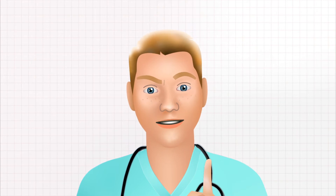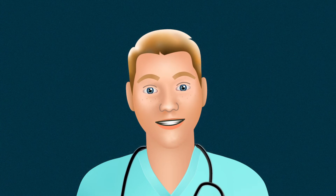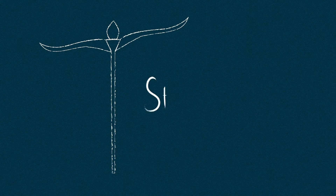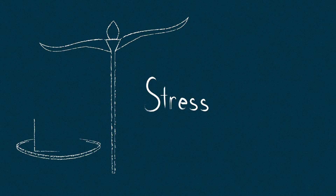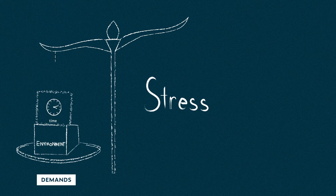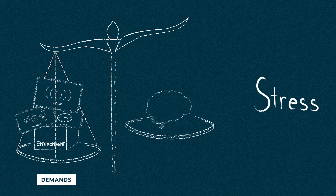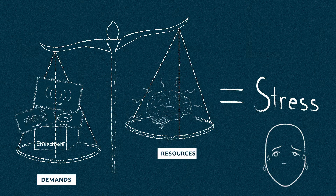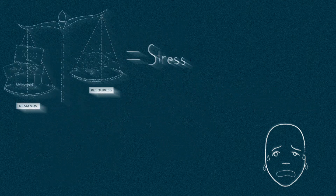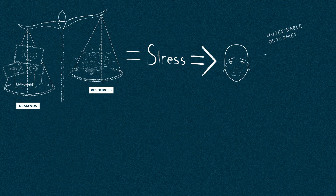Let's narrow in on a definition of stress for the purposes of this course. According to Driscoll and Salas, the term stress describes a process by which environmental demands — for example, time pressure, novel or threatening events, and noise — evoke an appraisal process in which perceived demand exceeds resources, and results in undesirable physiological, psychological, behavioral, or social outcomes.